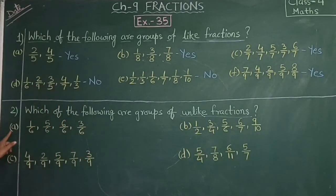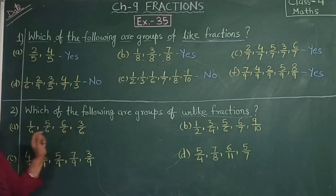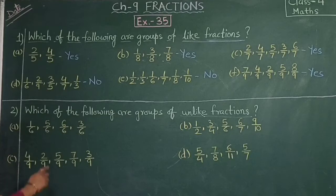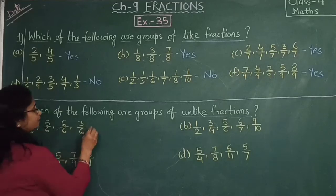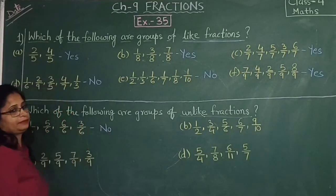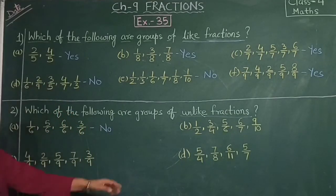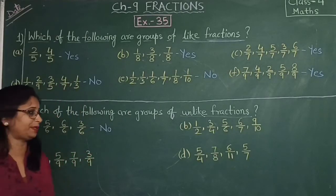See first question: 1 by 6, 5 by 6, 6 by 6, 3 by 6. The denominator is the same — 6, 6, 6, 6. Is this an unlike fraction? No. Because the denominator is the same, it is not an unlike fraction.